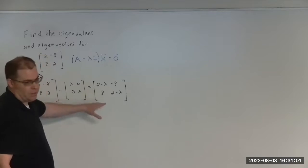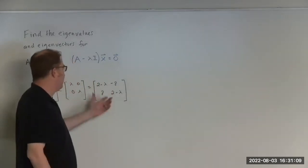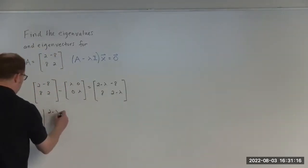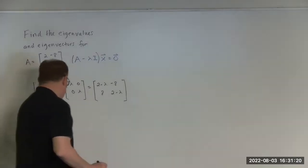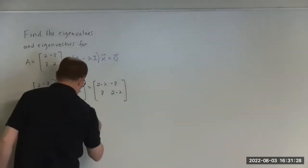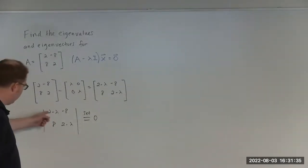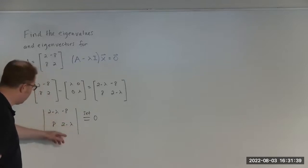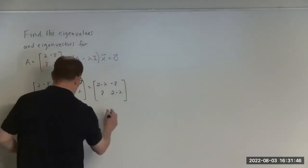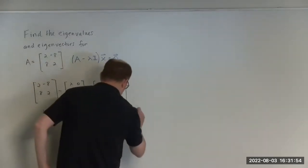Now we want the determinant of this to be equal to zero. We want to find the eigenvalues that make the determinant equal to zero. For a 2 by 2 matrix, the determinant is just the product of the diagonal values minus the values on the off-diagonal. So that's going to give us our characteristic equation: (2−λ)² minus (−8)(8), which gives us (2−λ)² plus 64 equals zero.